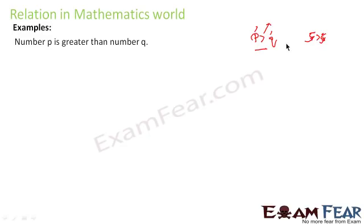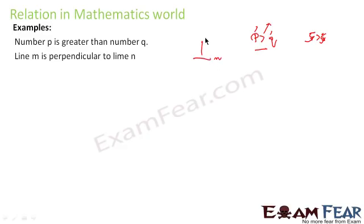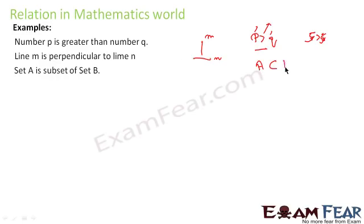Similarly, when we say 'line M is perpendicular to line N,' there are two identities involved — line M and line N — and there is a property: both lines are perpendicular. This is also an example of a relation. When we say 'A is a subset of B,' there are two elements — A and B — and there is a pattern: A is a subset of B.